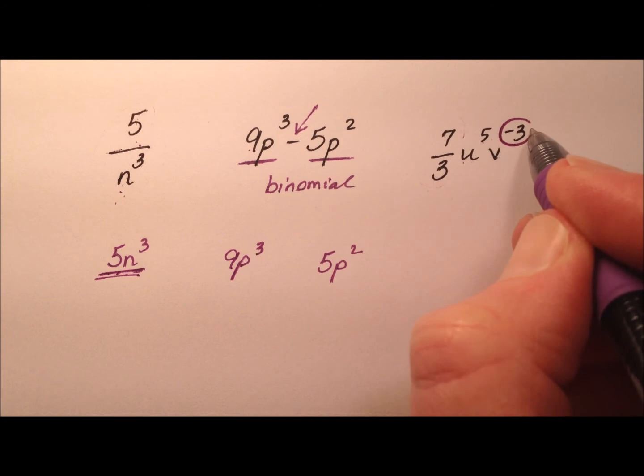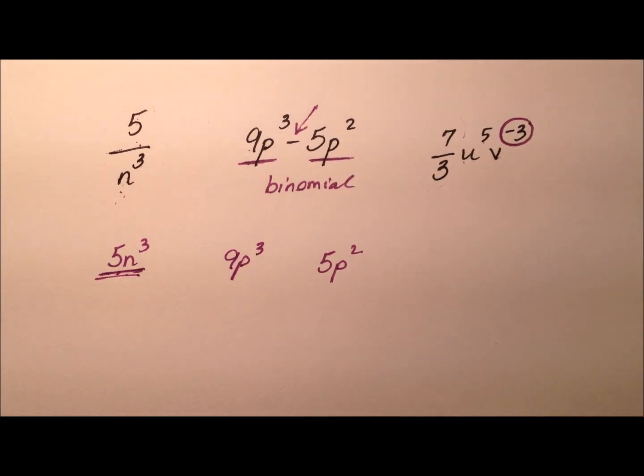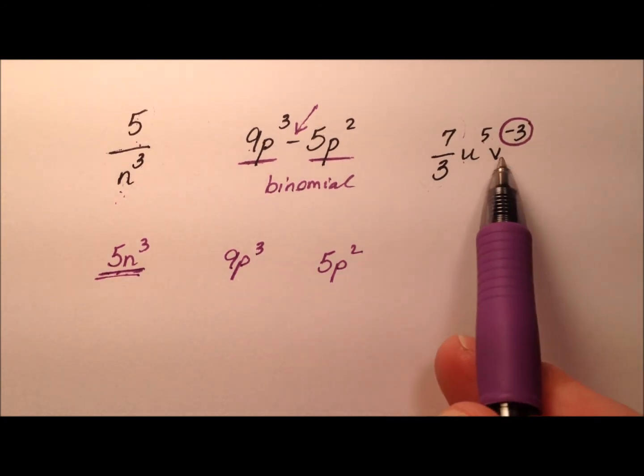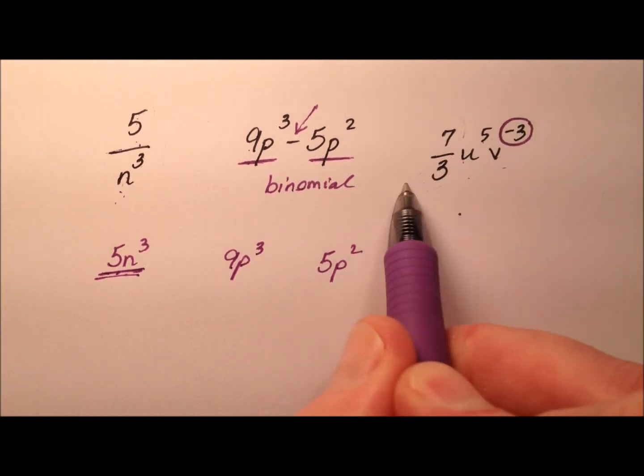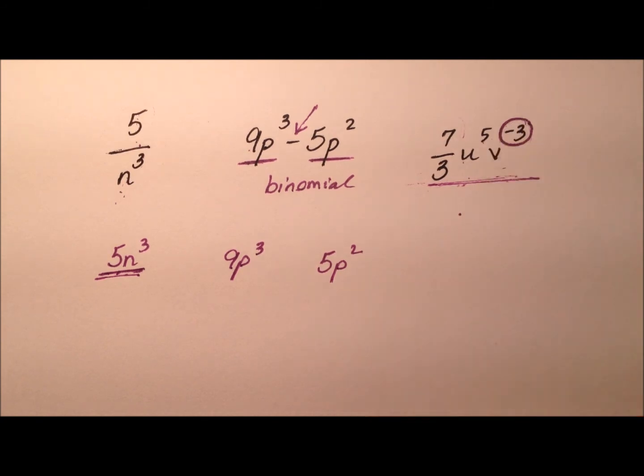So we cannot have a negative exponent because that means division, right? Because if we rewrote that, v cubed would be in the denominator. So that's no go. So this is not a monomial because we have a negative exponent up here.